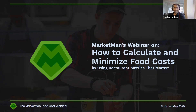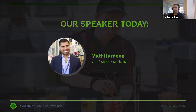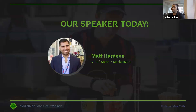So first and foremost, thanks so much for joining. Today's topic is how to calculate and minimize food costs by using restaurant metrics that matter. My name is Matt. I'm the VP of sales here at MarketMan. MarketMan helps restaurants keep costs under control and efficiently manage their inventory by automating back of house operations. Today's conversation is going to be about food costs, and we're going to tie in how the MarketMan platform can assist you in getting to those goals.